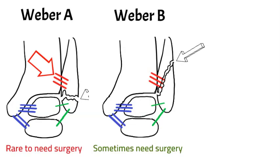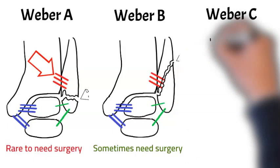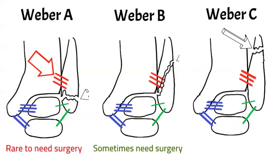Weber B fractures sometimes need surgery. In Jackson's case, it may well have been displaced or there's likely evidence of a syndesmosis injury, meaning he needed it fixed. The third classification is Weber C, which almost always needs surgery — it's above the level of the syndesmosis, above the level of the red lines. They almost always need something done, so it's a possibility that he could have had that as well.